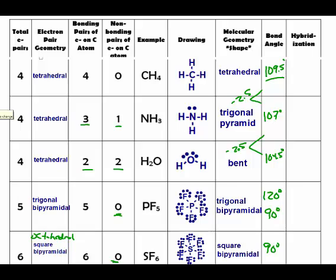Tetrahedral has four things coming off, giving sp³ hybridization. Trigonal pyramidal has three atoms and one lone pair — four total things — so that's sp³. Water has two atoms and two lone pairs — also four things — so that's also sp³. Notice all tetrahedral electron pair geometries have sp³ hybridization.